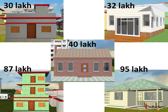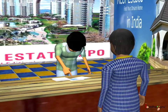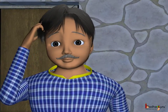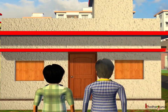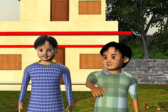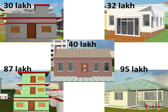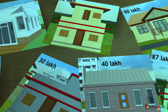Now let us understand it. As we saw in the story, a person wanted to buy a house, so he went to a real estate agent. The agent showed him many houses, starting from 30 lakhs to the very expensive house of 95 lakhs. Obviously he couldn't buy a house worth 95 lakhs as he didn't have that much money. He had saved 45 lakh rupees to buy his dream house.